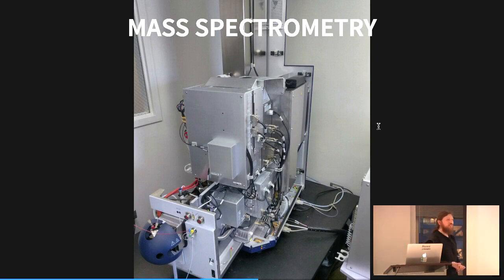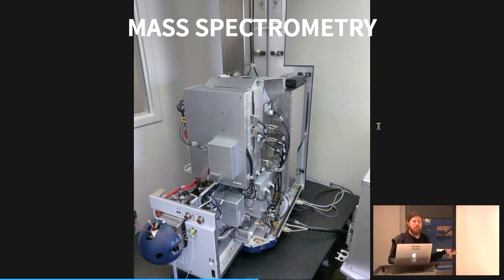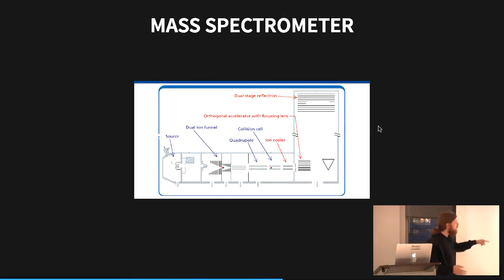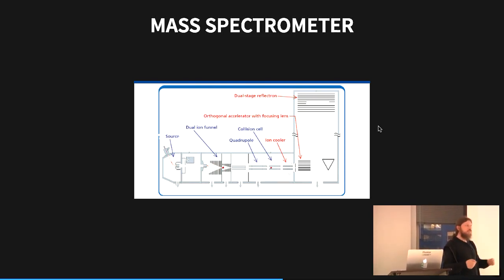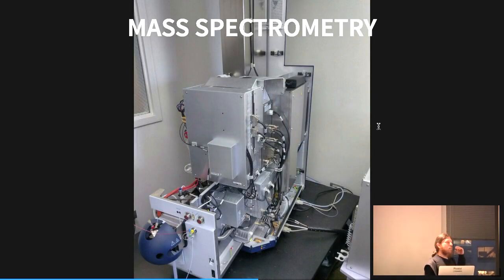Another machine we use is a mass spectrometer — essentially a highly precise balance at 0.1 parts per million precision. That means if a fly on my shoulder lost a wing, that's the kind of weight difference we'd detect. For molecules, we can detect exactly how many carbons, hydrogens, and oxygens are present. Inside the machine you ionize things, separate ions by mass, then use a collision cell — sending nitrogen to break the molecules — and weigh the fragments.